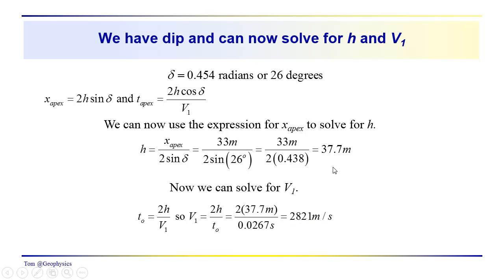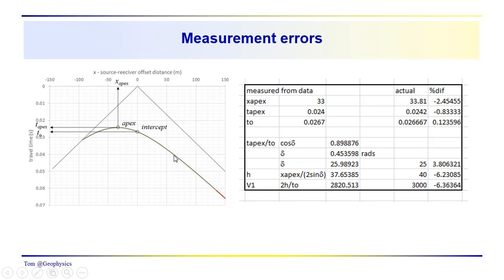I would bet that you got slightly different numbers for the dip, thickness of the layer, and the velocity. And that's what we'd expect from working a problem like this. Everybody's going to measure these locations slightly differently. So these were my measured data over here, 33, 0.024, 0.0267.